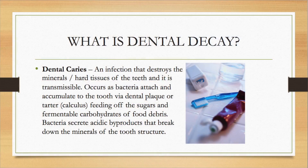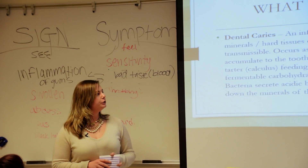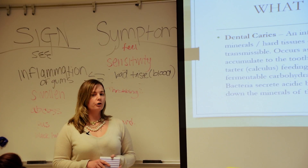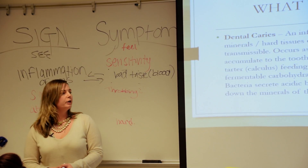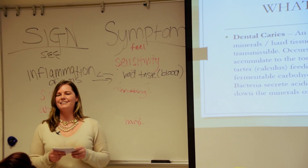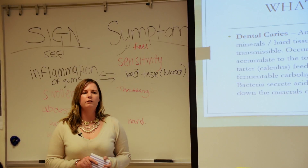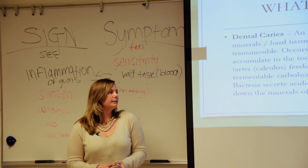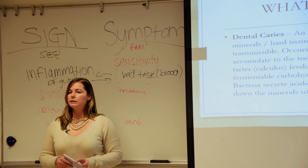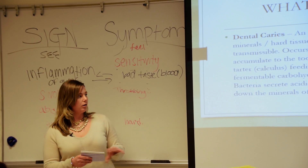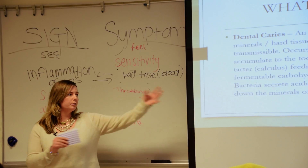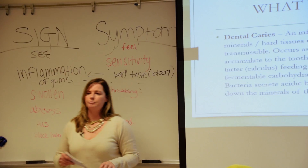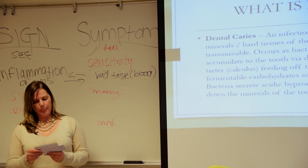What is dental decay? Dental decay is an infection. It spreads and can be transferred from person to person. It starts with bacteria attaching to the tooth through dental plaque or tartar — also known as calculus. That's a professional term; we're not talking about math. The bacteria feed off what we eat, creating acidic byproducts — essentially waste products — that make the teeth weak and start breaking them down.